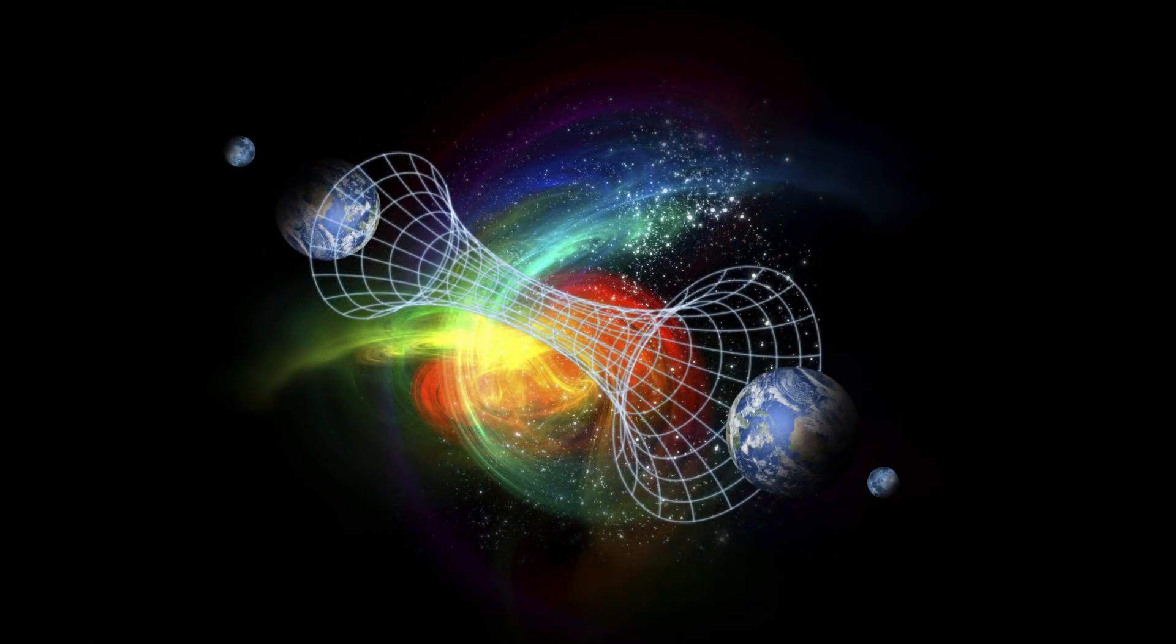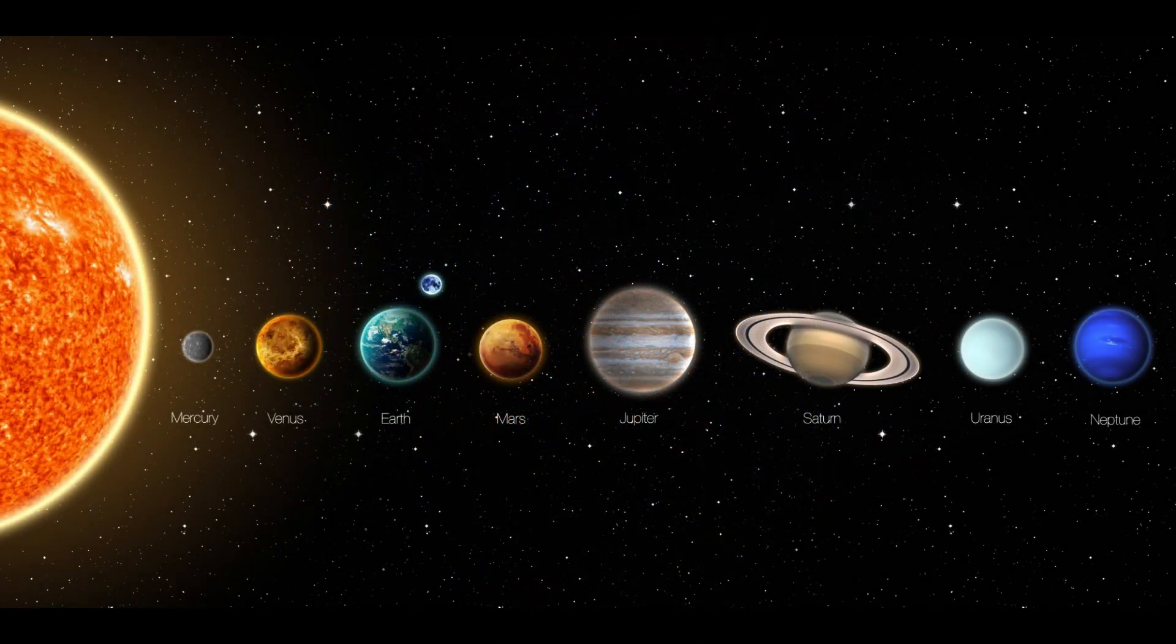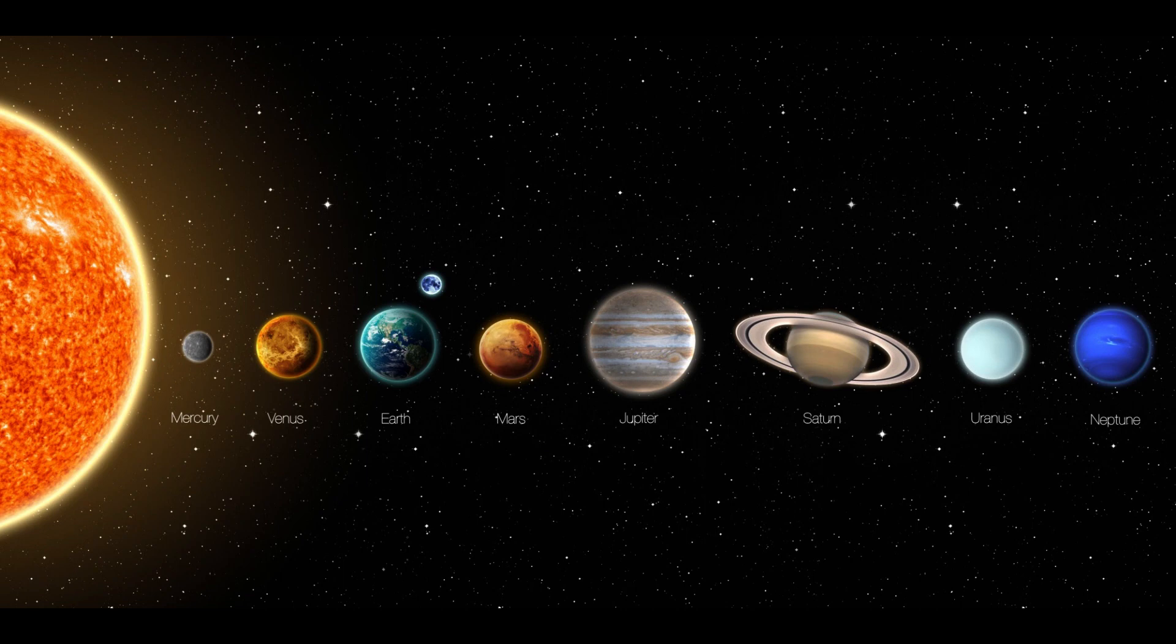There may be parallel universes with different physical laws and constants. There are around 8 planets in our solar system, with Earth being the only one known to have life.